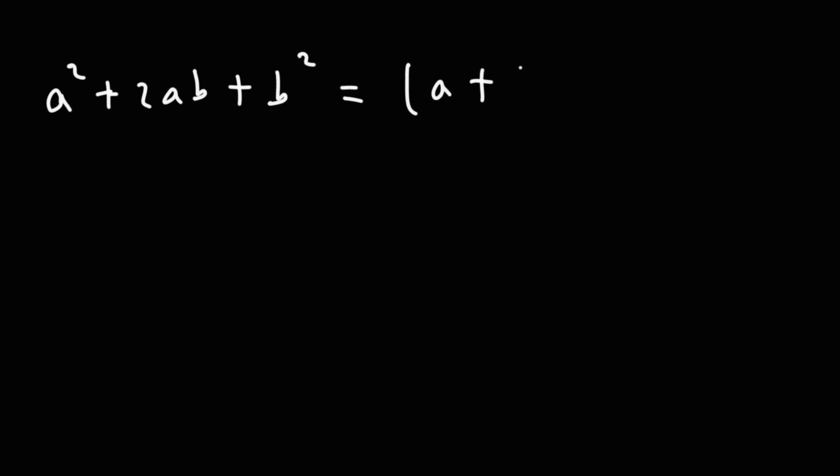Now, let's say if you have a trinomial, a perfect square trinomial, in this form, a squared plus 2ab plus b squared. To factor it, you can use this formula. It's simply a plus b squared. And if you have minus 2ab instead of plus 2ab, it's just going to be a minus b to the second power. So those are the formulas that you could use if you have perfect square trinomials.